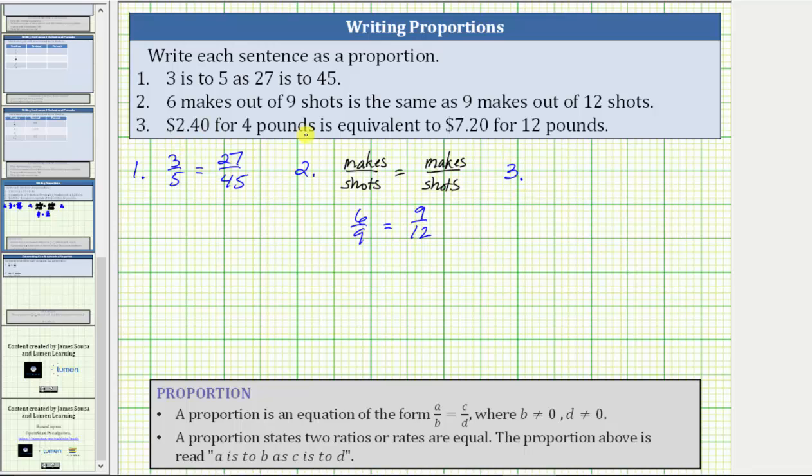The proportion will be in the form of dollars per pounds equals dollars per pounds.